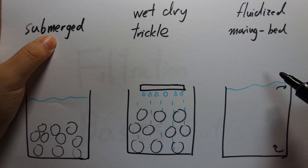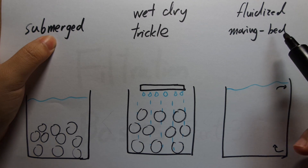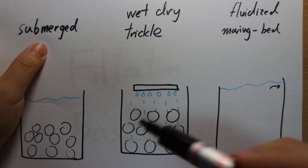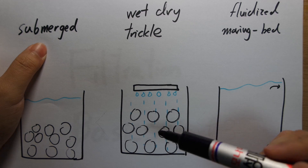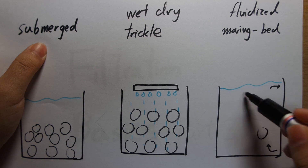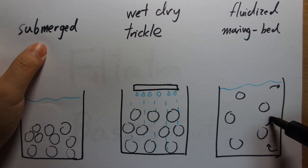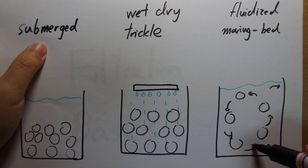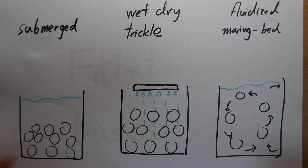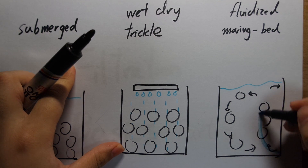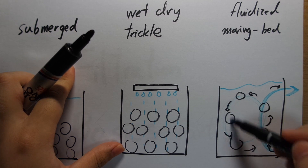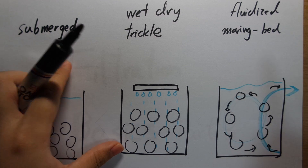The final way you can have your media set up is to have it fluidized, also called a moving bed filter. In this setup, your media is not stationary — both the water and the media are moving. Your media is constantly tumbling around, driven by a strong water current running through the filter, making the media tumble within it. That is a fluidized bed or moving bed filter.